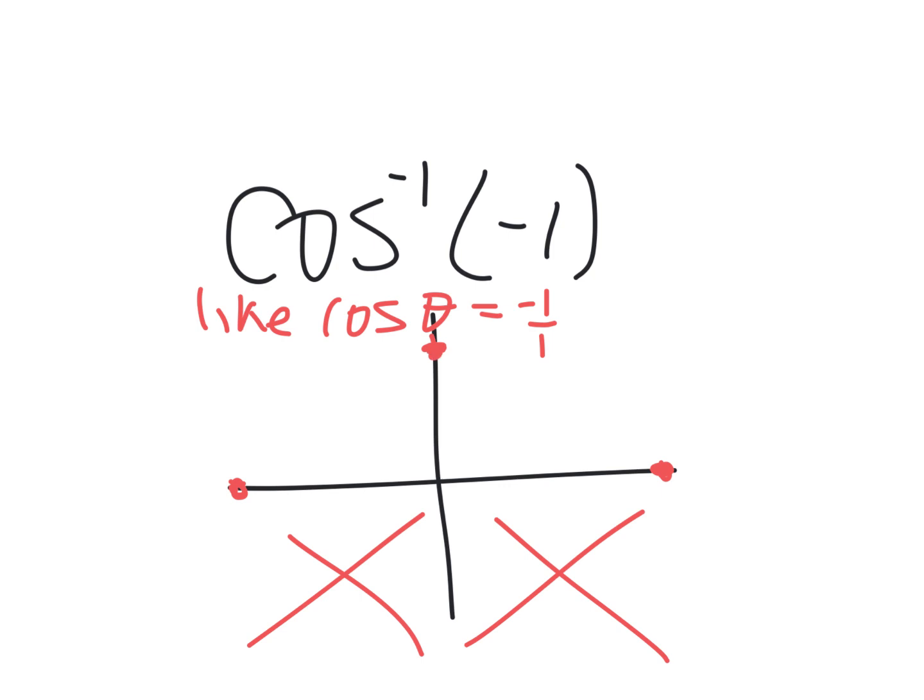One comma zero. Zero comma one. Negative one comma zero. And now I've got to know those x, y, and r definitions. Cosine is... Brady, you remember it? X over r. X over r is correct. All of these have a radius of one. So that part's easy. So then, which one has an x of negative one? That one.